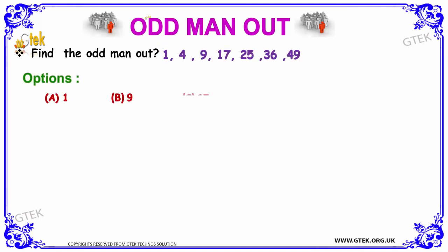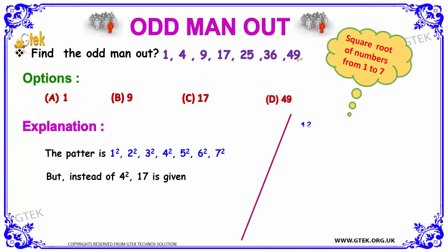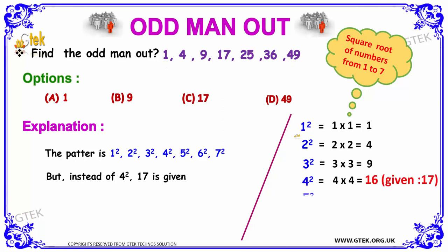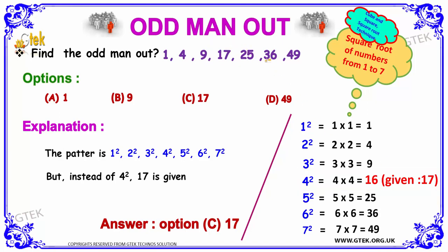For the series 1, 4, 9, 17, 25, 36, and 49: 1 square is 1, 2 square is 4, 3 square is 9, 4 square is 16 — but here it's shown as 17, which is different. Then 5 square is 25, 6 square is 36, and 7 square is 49. So the answer is 17.